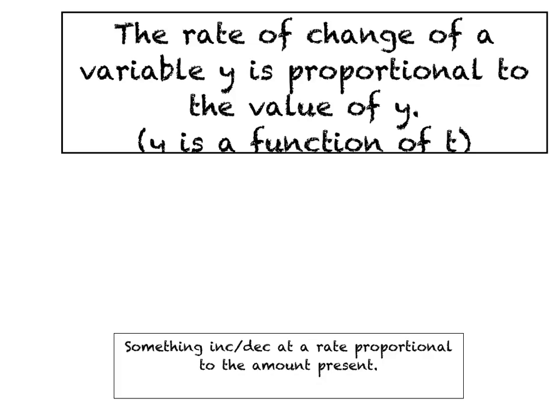Believe it or not, here's a sentence that is very real in our daily lives. It says that the rate of change of some variable, we'll call it Y for now, is proportional to the present amount or the value of Y. And just as a little side note here, Y is a function of T. We're going to try to translate this very famous sentence into a mathematical equation.